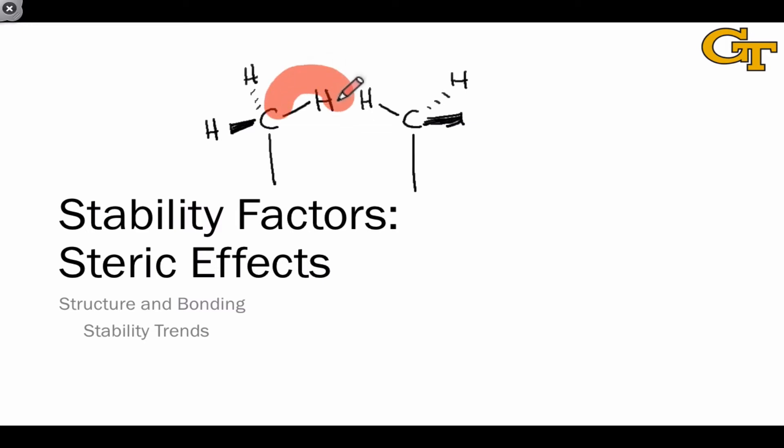Electron clouds near atoms or groups take up space, and because of the Pauli exclusion principle and electron-electron repulsion, electrons can't really occupy the same space. In molecules in which groups are forced to do this due to other reasons, a destabilizing effect often results.